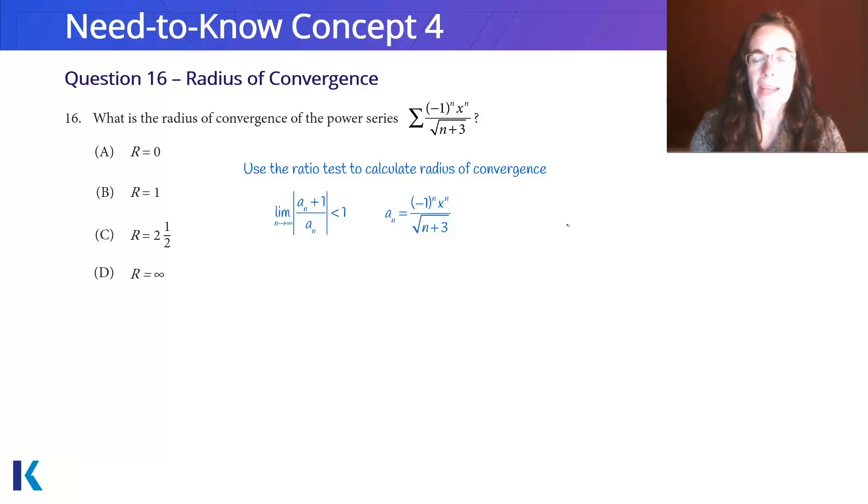So I know that a sub n is going to be negative 1 to the n, x to the n, over the square root of n plus 3 because they gave us that power series in the question.